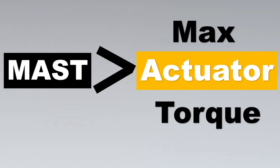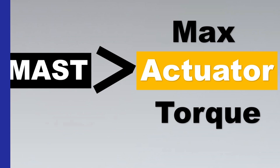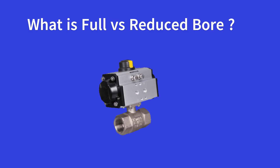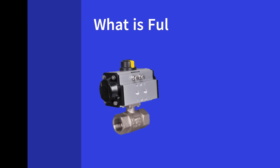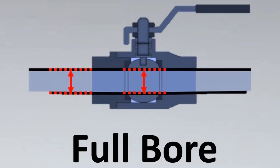This is to be noted in bold letters for every engineer: if you want to engineer a plant in a safe fashion, MAST must always be greater than the maximum actuator torque.